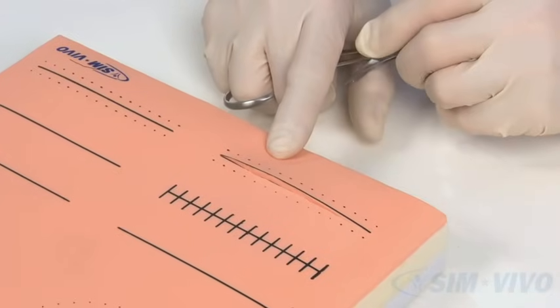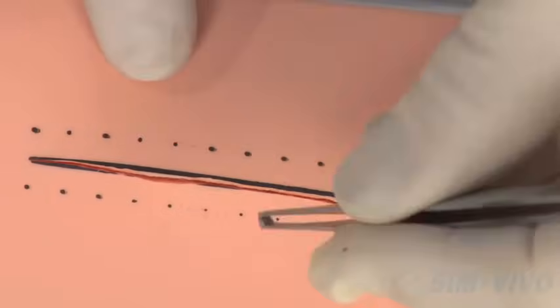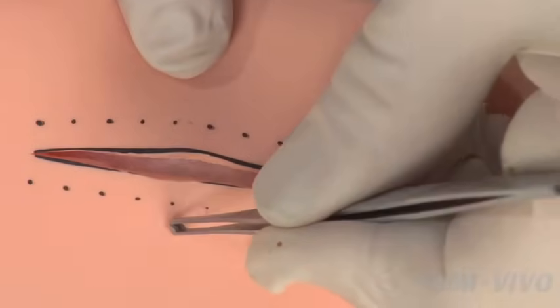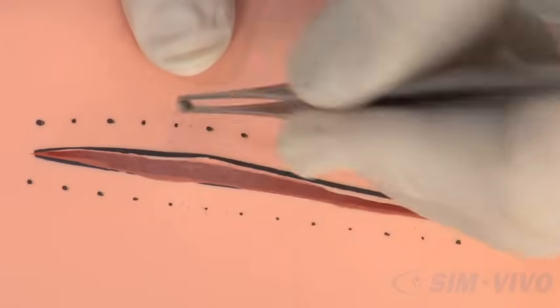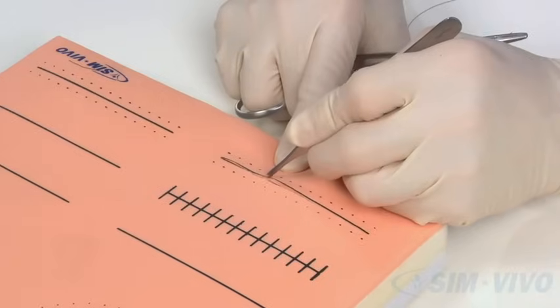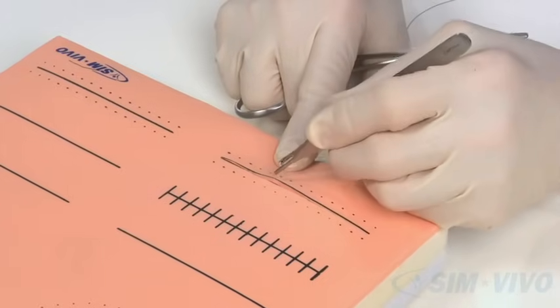In order to treat this, surgeons developed the vertical mattress suture, which we're going to demonstrate. The purpose of a vertical mattress suture is to use a large bite far away from the wound to bring the wound together, then a small bite to approximate the edges of the skin.